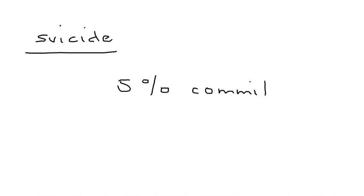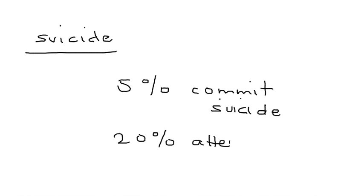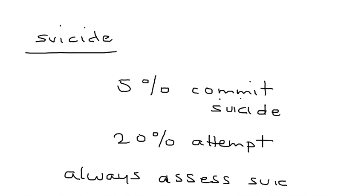One important thing before I get into diagnosis and treatment is suicide. About 5% of schizophrenia patients do commit suicide successfully, and about 20% will actually attempt suicide. So it's very high — anytime you have a patient with schizophrenia, always assess the risk of suicide.